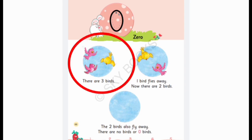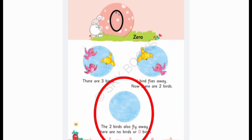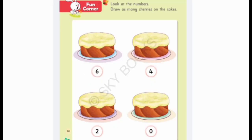Please take your textbook. Children, there are three birds. Then, one bird flies away. Two birds. Then, the two birds also fly away. How many birds are here? Yes, here is no birds or zero birds. Children, this is your activity.